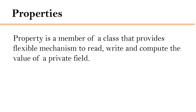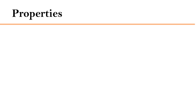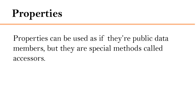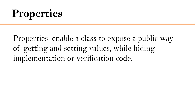In C-Sharp, a property is a member of a class that provides a flexible mechanism to read, write, and compute the value of a private field. Properties can be used as if they are public data members, but they are special methods called accessors. Properties enable a class to expose a public way of getting and setting values while hiding implementation or verification code.